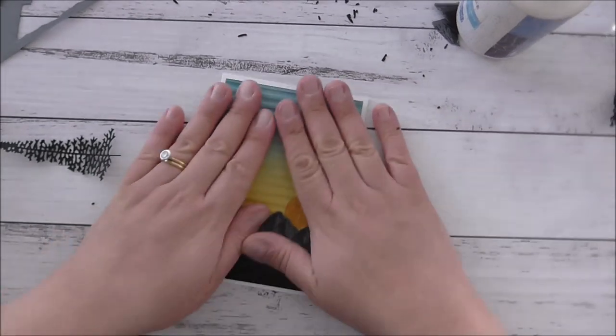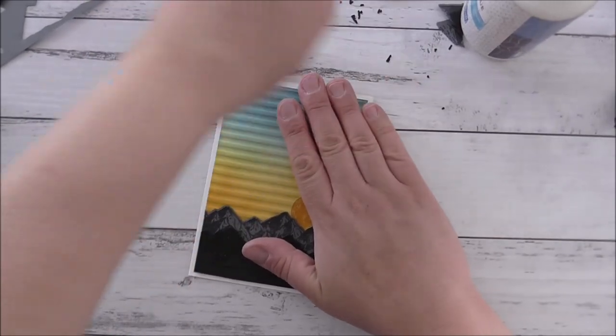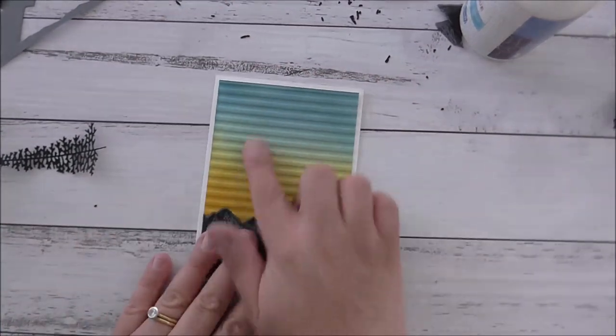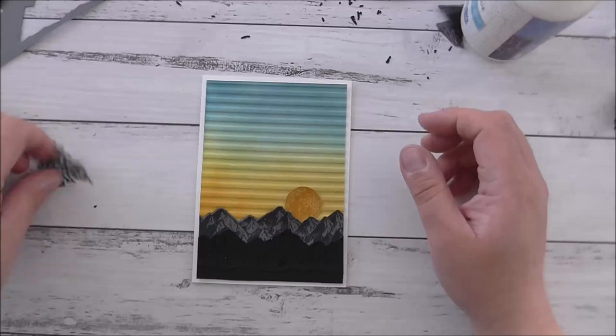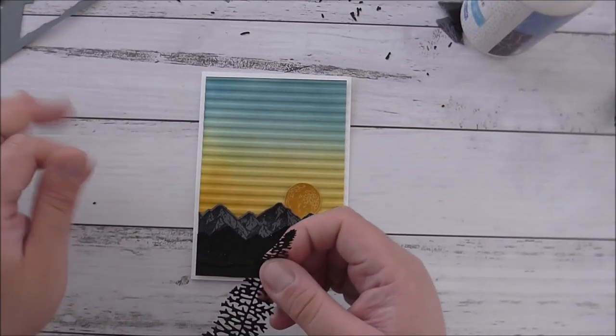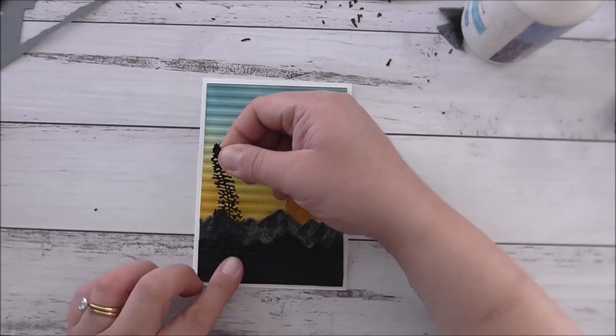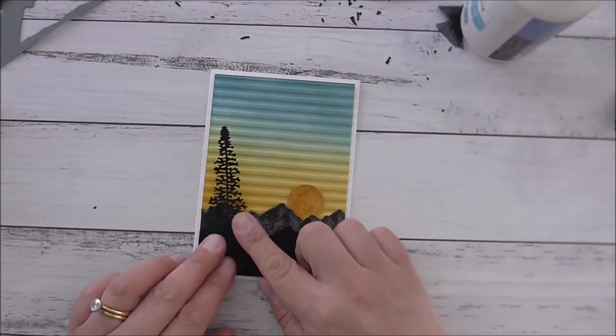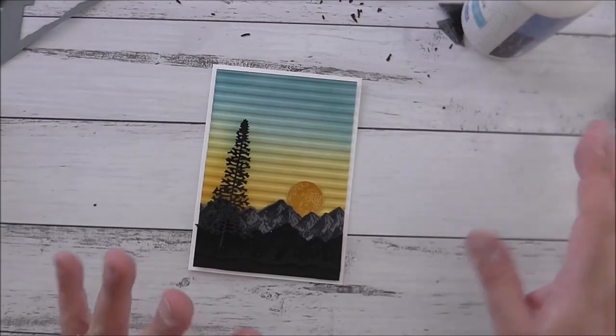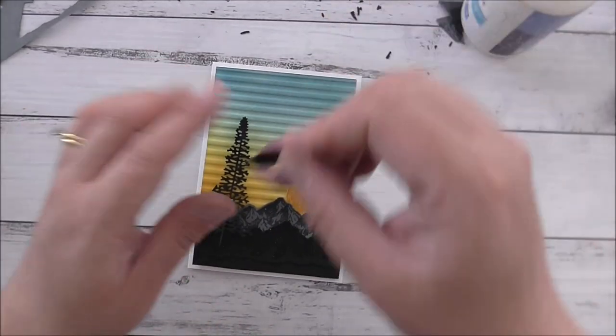I can even use this as a thank you card too if I want to. The sky's the limit. I love the dimension of having the sky embossed with that embossing folder, the corrugated embossing folder. So I'm just going to add the trees like that. Gorgeous, just beautiful. I'm loving the way this is turning out.